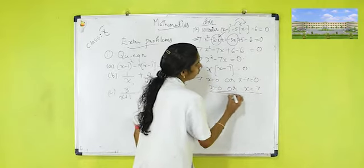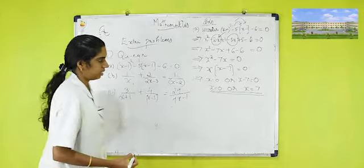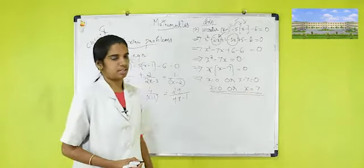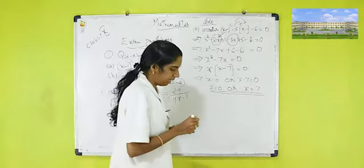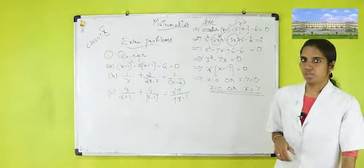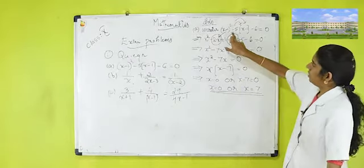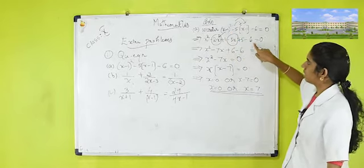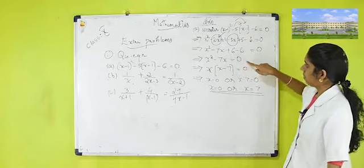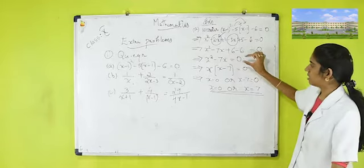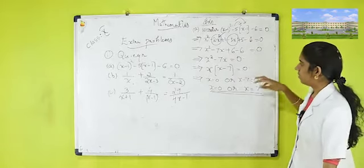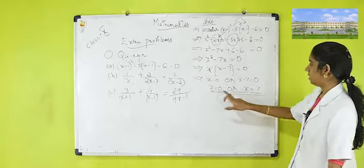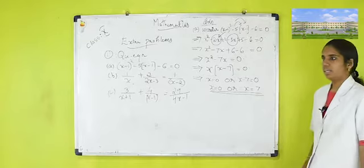So x = 0 and x = 7 are the two roots of the quadratic equation. We expanded using (a − b)² formula, simplified the bracket, got x² − 7x = 0, then factored to x(x − 7) = 0, and finally got x = 0 and x = 7.